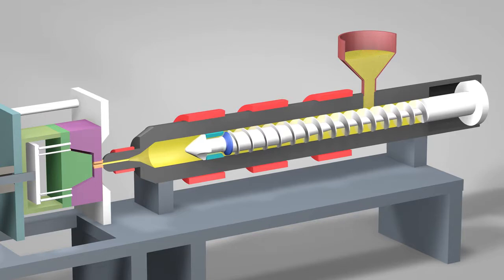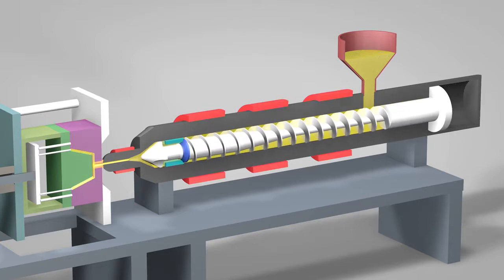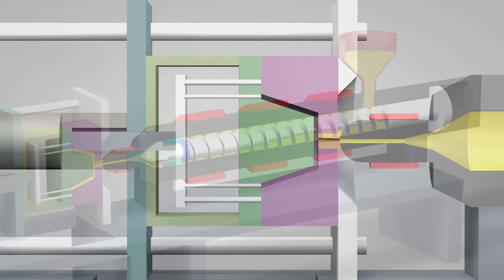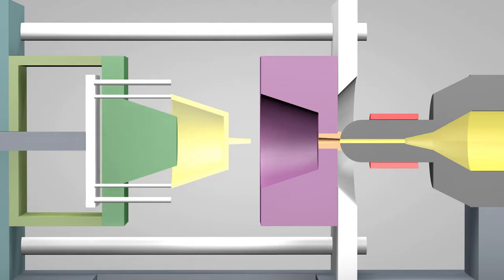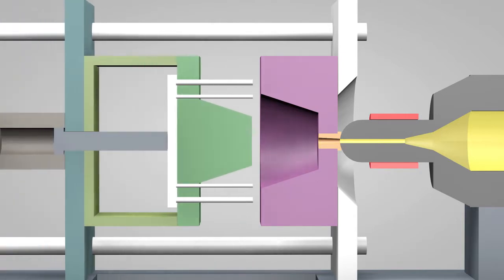Once enough molten plastic is in front of the screw, it ramps forward like the plunger of a syringe. In a matter of seconds, the screw injects the molten plastic into the empty part of the mold called the cavity image. The plastic solidifies in under a minute. The mold opens and the part is ejected. The mold then closes and the process repeats.